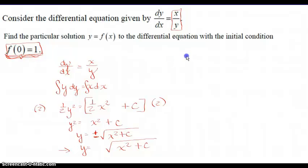Now we're going to use our initial condition. We're going to plug 1 in for y. We're going to plug 0 in for x. And we're going to find our constant, c. So I'm going to square both sides. 1 squared is 1. 0 squared is 0. So c is a positive 1. So my particular solution is y equals the square root of the quantity x squared plus 1.